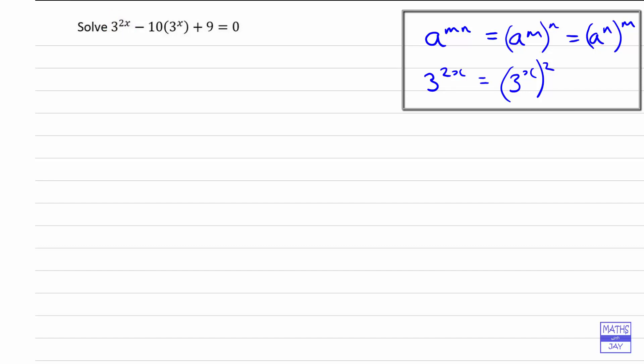Right, so once we've realized that, then it becomes straightforward. So we're going to write 3 to the x all squared. And then the rest of the equation will stay the same. And now you can see that what we've got is something squared minus 10 times that something plus 9 is 0. So we've got a quadratic. And to make it even more obvious, let's actually make a substitution.